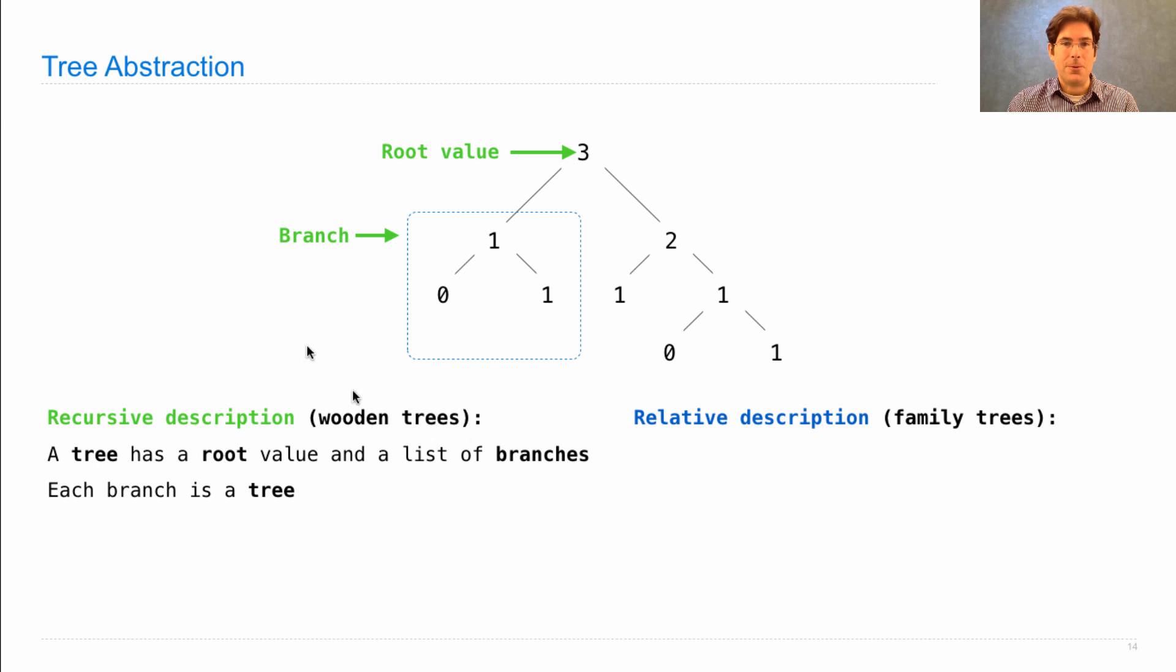So all there is to this whole tree is just the root value and its list of branches. And those branches have root values, and that defines the entire tree. There are trees that have zero branches, and those are called leaves. So there's a leaf, and that's a tree with a root value of one and no branches.